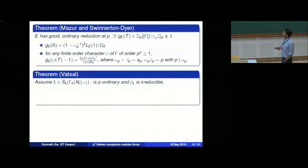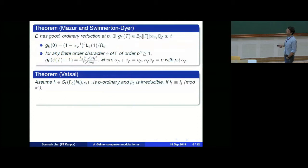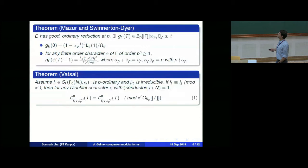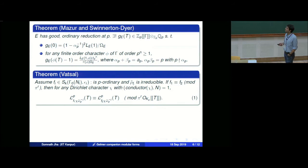Watzell has a congruence result: suppose again f_1, f_2 are p-ordinary and the residual representation is irreducible. Then if f_1 and f_2 are congruent mod π^r, for any Dirichlet character χ with conductor coprime to N, we have a congruence of p-adic L-functions: L_p(f_1, χ·ω_p^{−j}) and L_p(f_2, χ·ω_p^{−j}) are congruent in the Iwasawa algebra.